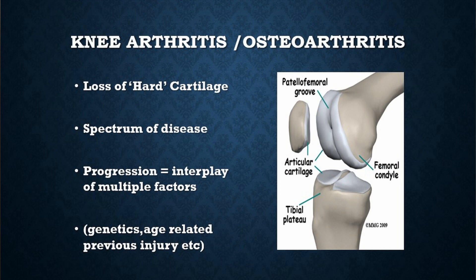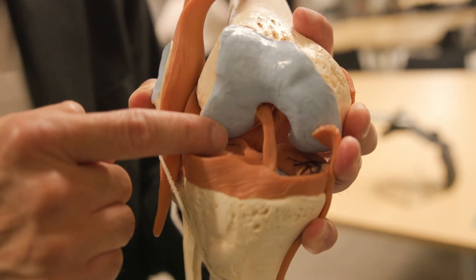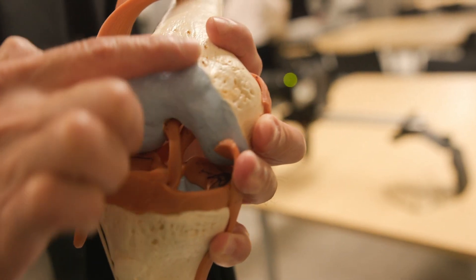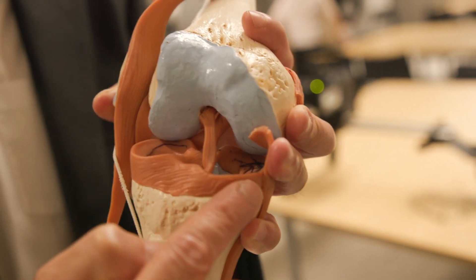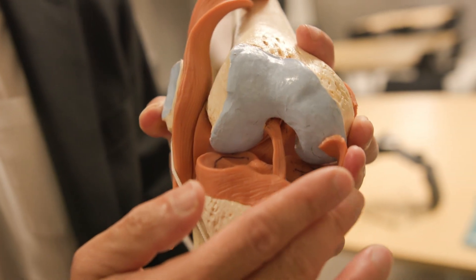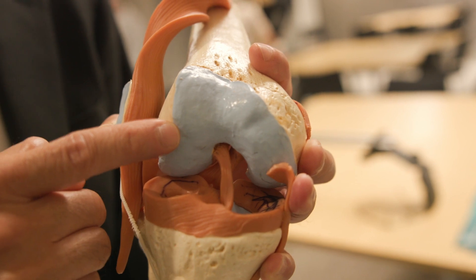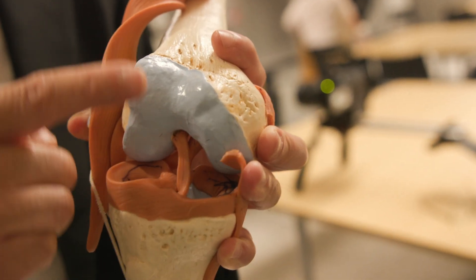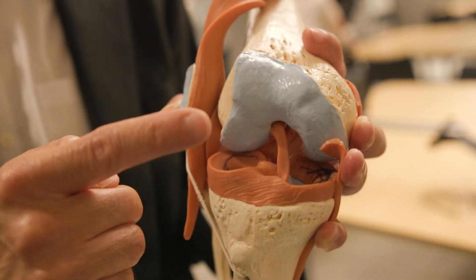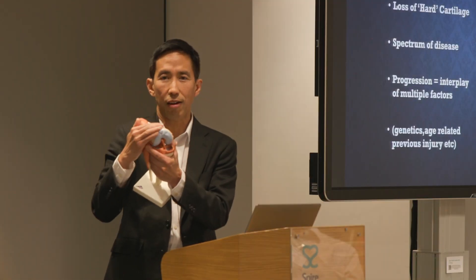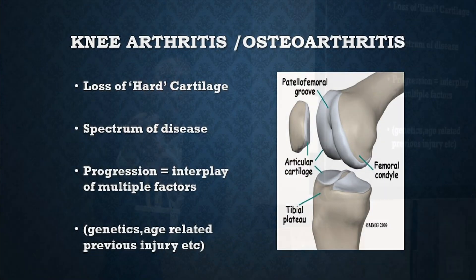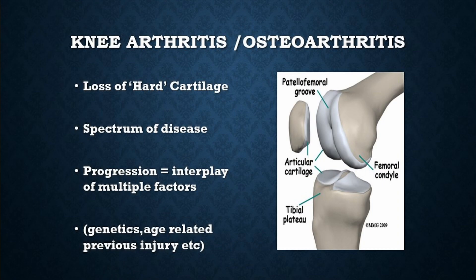Knee arthritis is defined as loss of cartilage — the hard cartilage that lines the bottom end of your thigh bone and the top end of your shin bone. Arthritis is defined by thinning or loss of this cartilage, and it can range from mild, minor thinning right down to complete loss of cartilage. This loss of hard cartilage is what defines osteoarthritis. So it's a spectrum of disease, from very minor symptoms all the way to complete bone-on-bone osteoarthritis.